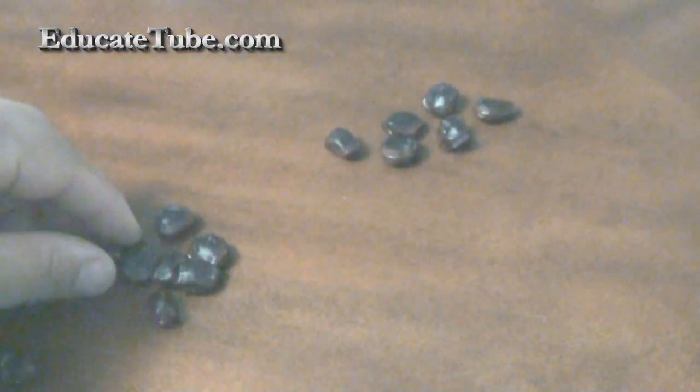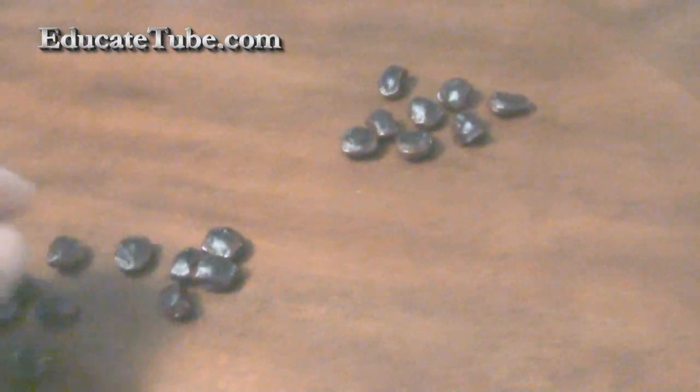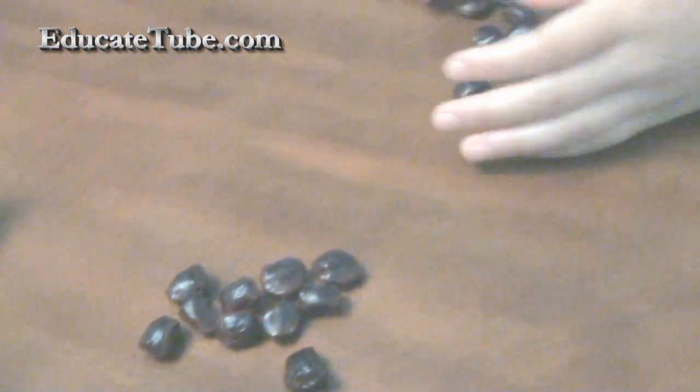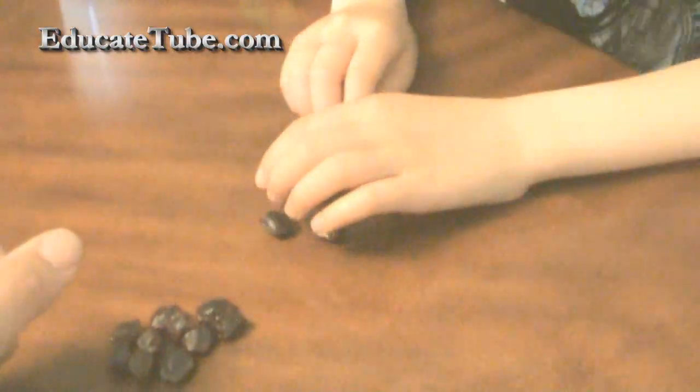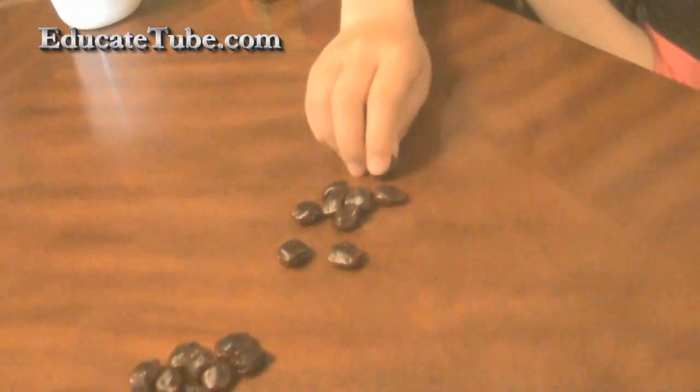So basically, if you have two players, I have my daughter here and myself. So each will get 10. 2, 4, 6, 8, and 10. And I got 10 as well. So first, we have to decide who's going to go first. Let's do rock, paper, scissor.